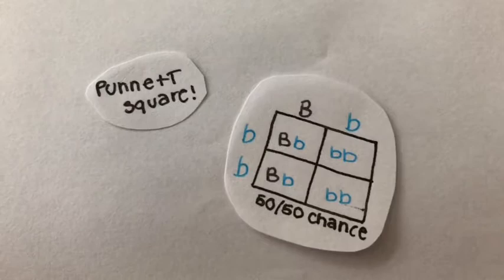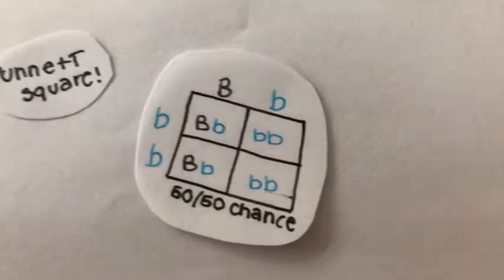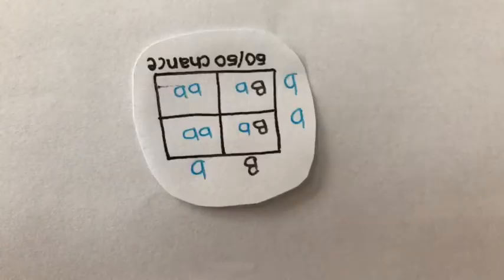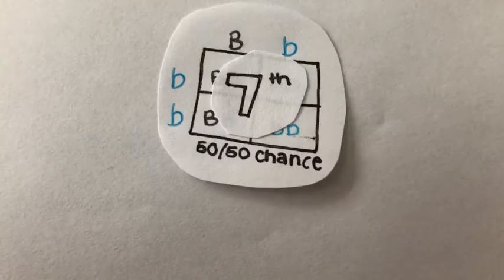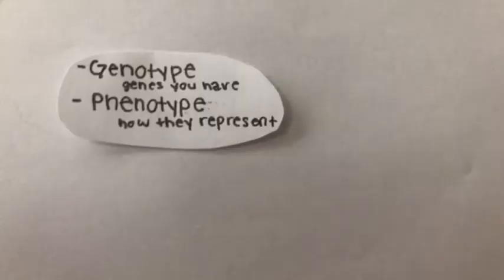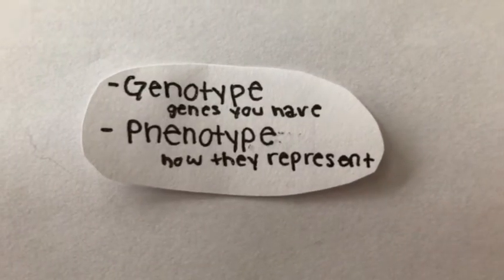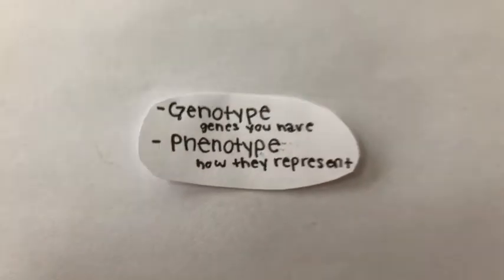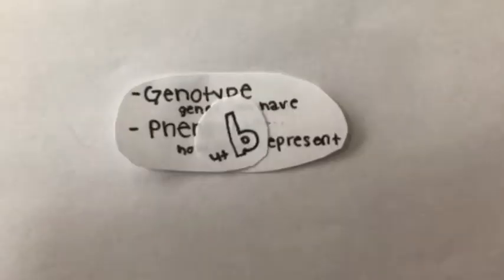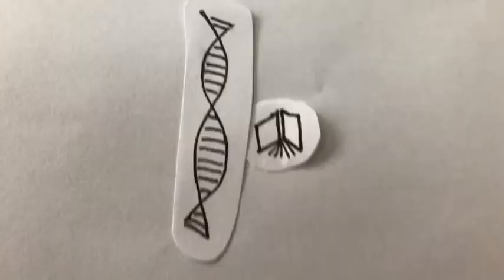This book directly relates to the 7th grade science curriculum when it references the use of Punnett squares in determining the possibility that someone will have, say, blue eyes. It also relates to the 9th grade topics of genotype and phenotype — what genes you have and how they represent themselves — referencing these constantly throughout the book.